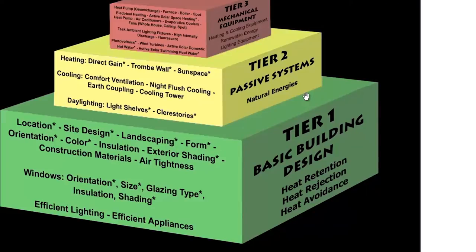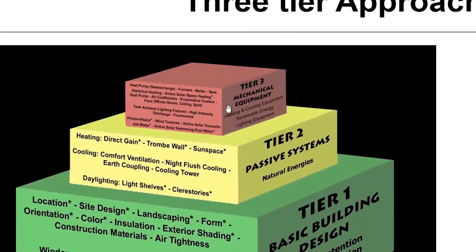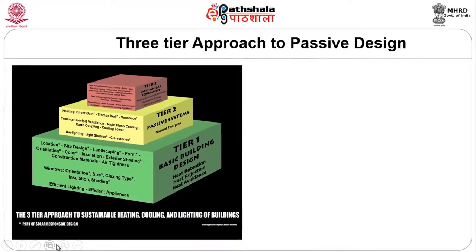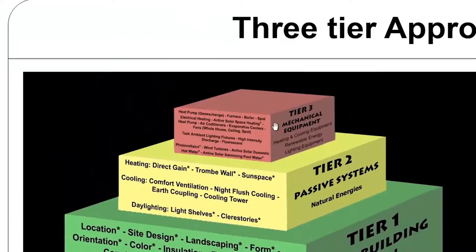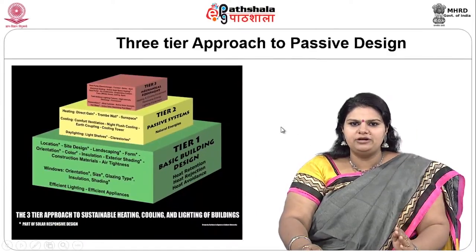Finally, at tier three, you look at mechanical equipment — how you can reduce energy consumption by reducing the number of mechanical devices involved. For heating, lighting, and cooling, some amount of energy will be utilized. The question is: how can we channel that into renewable energy — whether solar-driven, wind turbine-driven, or otherwise? These details have to be clearly demarcated as part of the passive design approach.